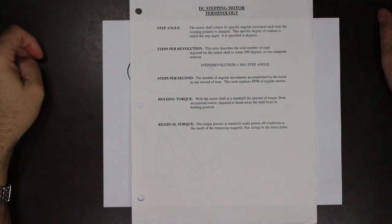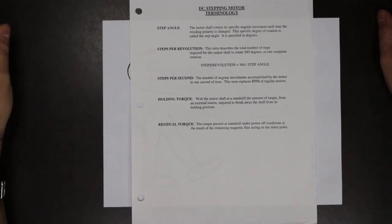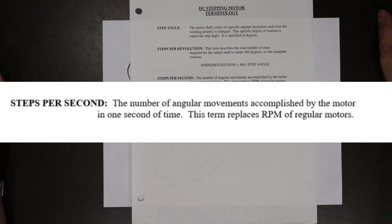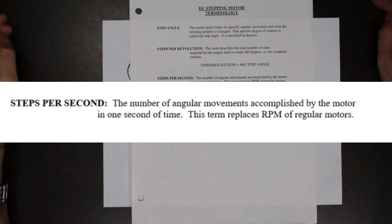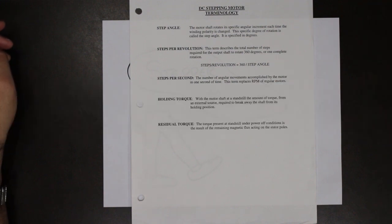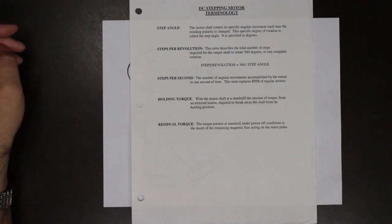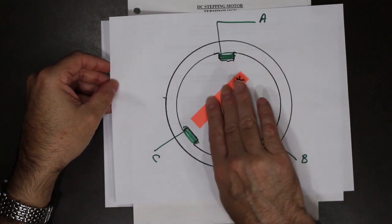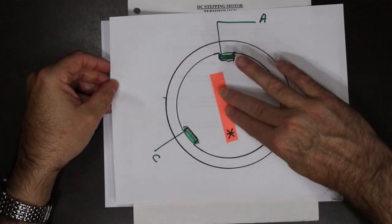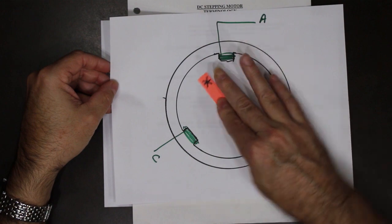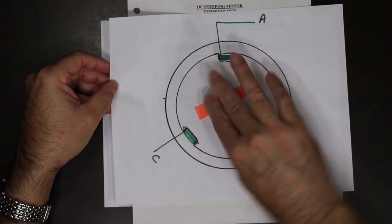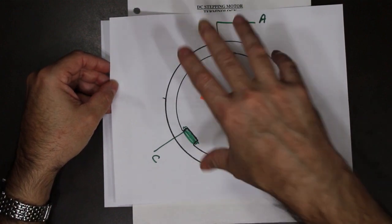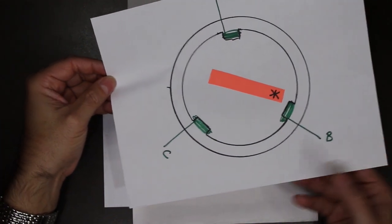Next on the list is steps per second — the number of angular movements accomplished by the motor in one second of time. In a stepper motor, this term actually replaces RPM for regular motors. It describes how many steps the motor goes through in one second of time, essentially how fast the motor can spin.